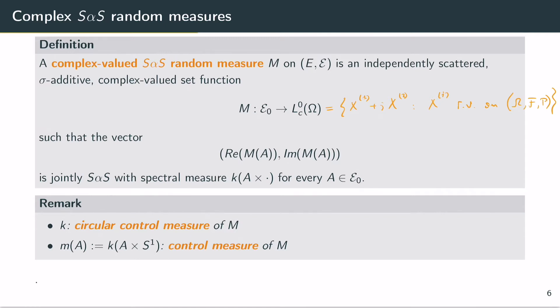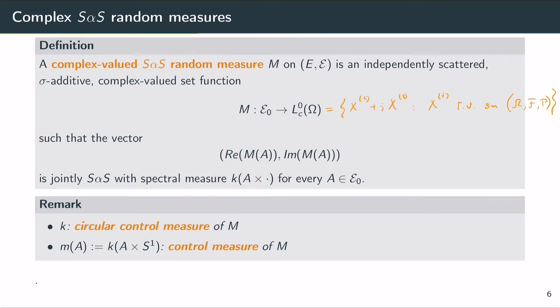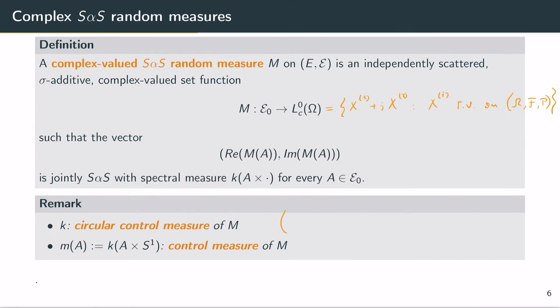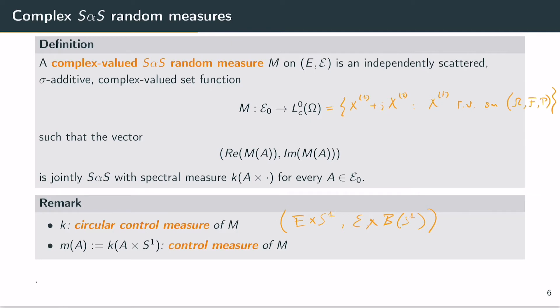What makes this random measure symmetric alpha stable is the fact that if you construct a vector out of the real part and the imaginary part of this random measure on a set A, then this random vector is symmetric alpha stable with spectral measure k given here. We call k the circular control measure, and it's a product measure on the product space of E and the unit circle S1. Another important measure is the control measure M of our random measure capital M.